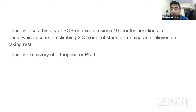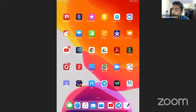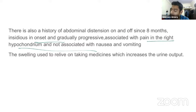The shortness of breath relieves on taking rest, but there is no history suggestive of orthopnea or PND. The patient also complains of abdominal distension on and off since 8 months, insidious in onset and gradually progressive, associated with pain in the right hypochondrium, with no associated nausea or vomiting. The swelling used to relieve on taking medicines that increase urine output.